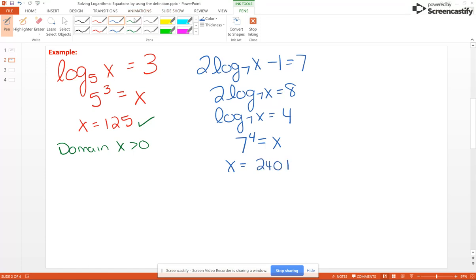Our domain for this particular log equation was x greater than 0, and I would say 2,401 is greater than 0. Let's look at another example.